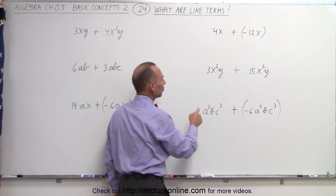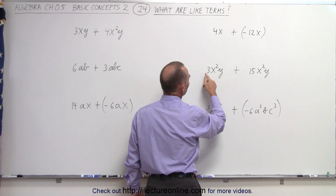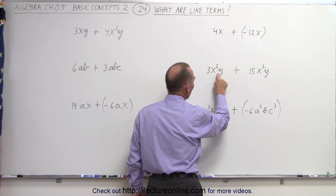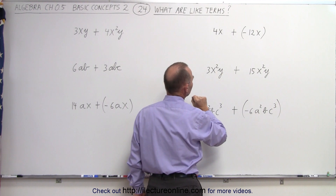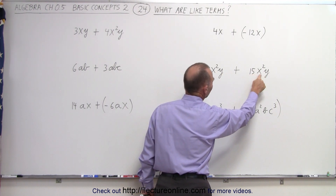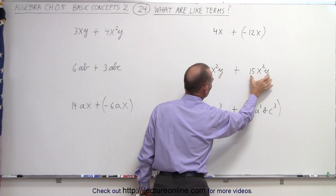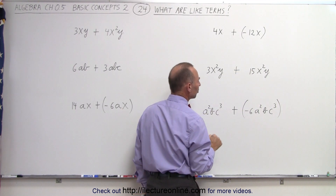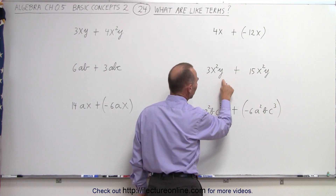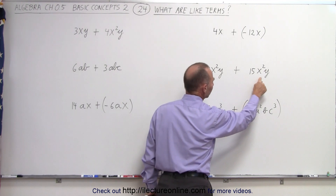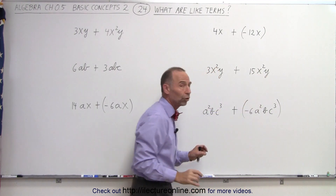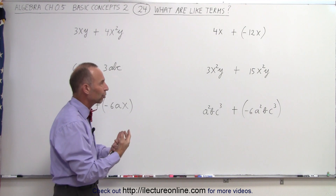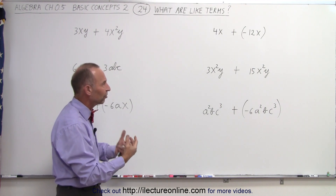Notice these are all what we call coefficients or factors. 3x squared and y are factors — they're multiplied together. Here, 15x squared and y are factors. These are both two terms because they're separated by an addition. And we can see that the letter portion x squared y is exactly the same in these two terms, which makes these two terms like terms.